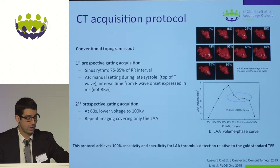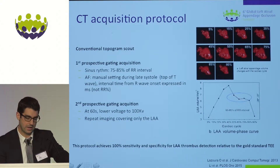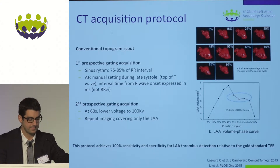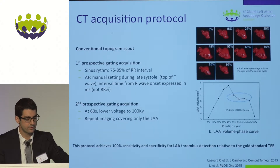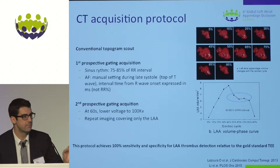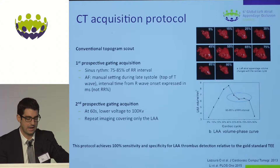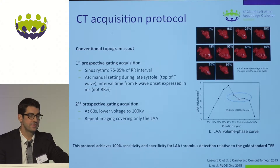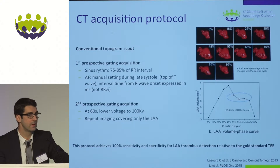The CT protocol involves a conventional topogram to localize the heart, followed by a threshold image acquisition with prospective gating between 65 and 85% of the RR interval. During the 65–85% phases, the LAA volume remains relatively constant, so measurements of the landing zone and ostium are closer to the true value. We repeat imaging covering only the left atrial appendage at 60 seconds after the initial contrast bolus to exclude the presence of a potential thrombus. This protocol achieves 100% sensitivity and specificity for LAA thrombus detection relative to the gold standard TEE, with very limited irradiation.